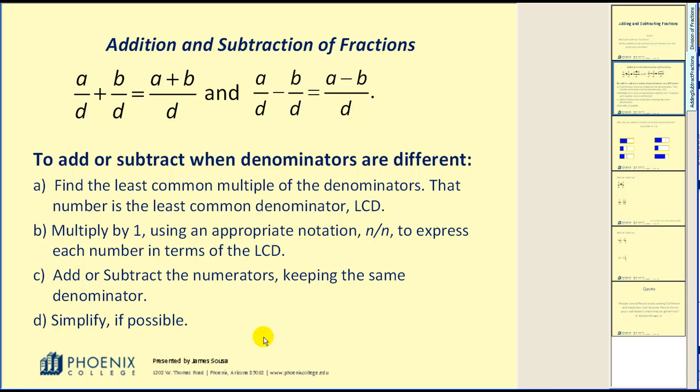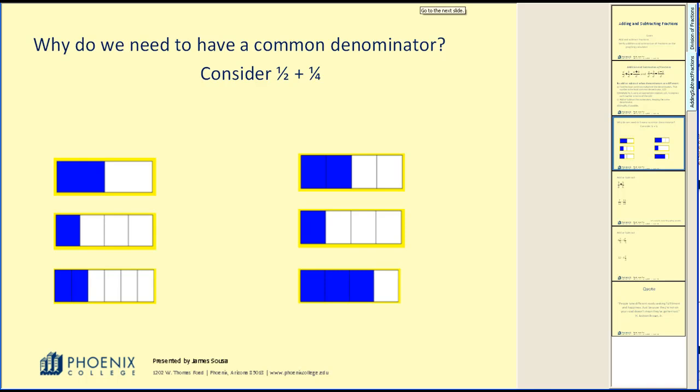I'd like to spend a moment explaining why it's so important that we do find a common denominator. Let's say for example we consider one-half plus one-fourth. Here's a common error that I see. One-half plus one-fourth. Well maybe we should just add across the top and add across the bottom. And why can't that be our answer? One plus one would be two. Two plus four would be six. So why can't one-half plus one-fourth equal two-sixths?